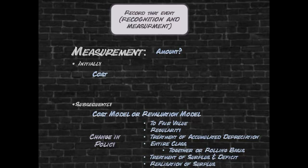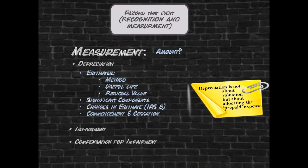Subsequent measurement is an accounting policy choice between the cost model and the revaluation model. IAS 16 again contains rules on the measurement of property, plant and equipment items included in both these models. A change in accounting policy from the cost model to the revaluation model is dealt with in IAS 16. Regardless of which subsequent measurement model is chosen, certain items of property, plant and equipment will be depreciated.